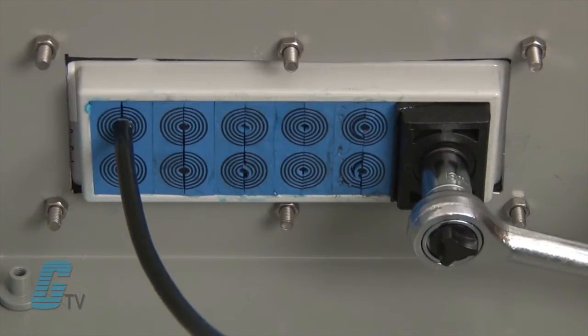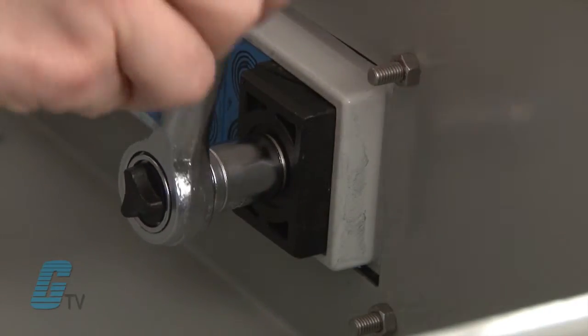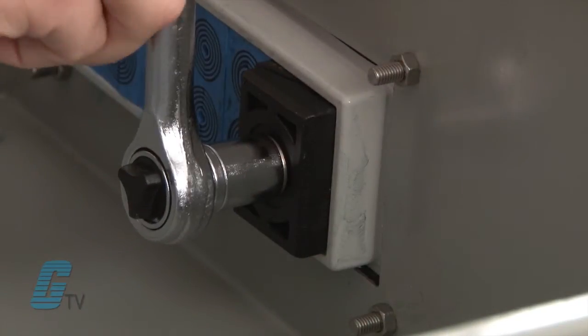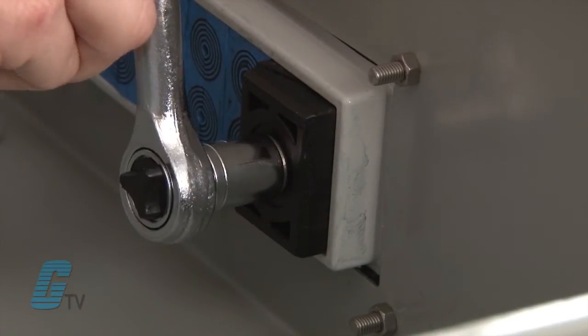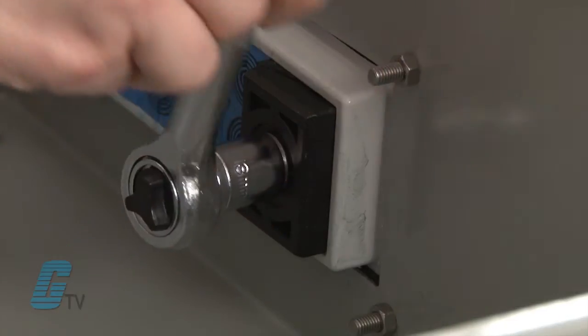Make sure not to use more than 10 newton meters or 7.38 foot-pounds of torque when tightening the compression unit as this could damage the installation.